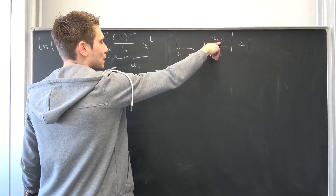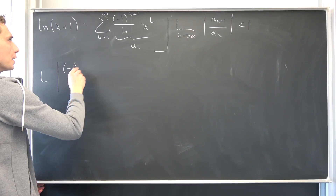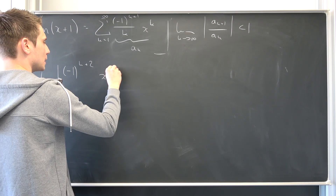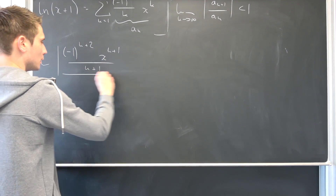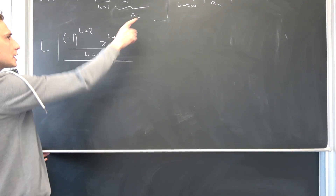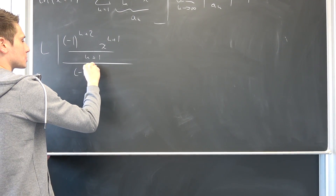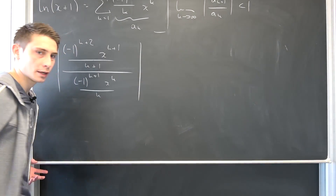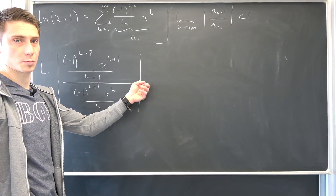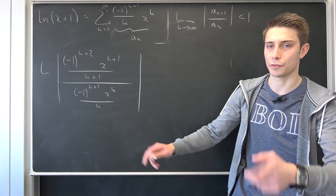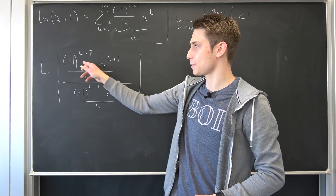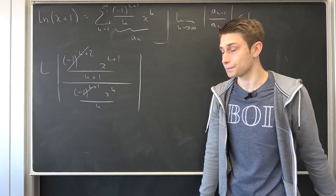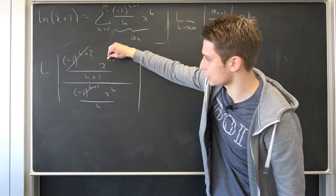Absolute value — just plug k+1 into everything here. So we are going to get negative 1 to the (k+2)th power, x to the (k+1)th power, over (k+1) — all over a_k, which is negative 1 to the (k+1)th power, x to the kth power over k. A lot of stuff is going to cancel out. The absolute value is multiplicative, meaning absolute value of a times b equals absolute value of a times absolute value of b, so we can distribute this absolute value into the negative 1. The absolute value of negative 1 is just 1, so let's get rid of that chunk. Also, x to the kth power cancels.